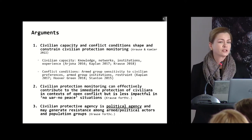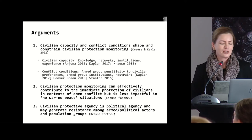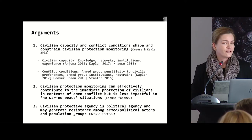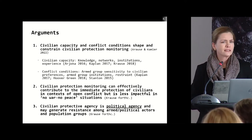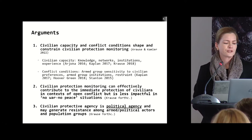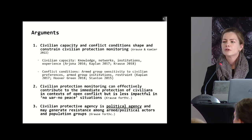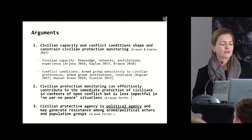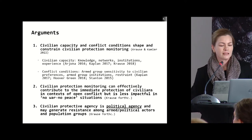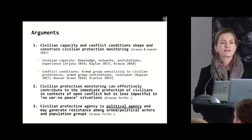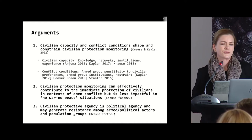Lastly, civilian protective agency is a form of political agency, and that should be very clear from the start. Political agency means it is rooted in certain worldviews, values, and norms, but also group interests and group mobilization. As political agency, it is contested and can generate resistance — not just among armed and political actors, but also importantly among some population groups. In Myanmar, that included some of the populations that were supposed to be served and protected by these civilian monitors.